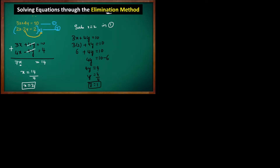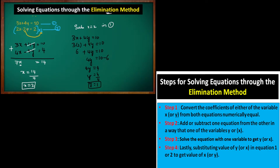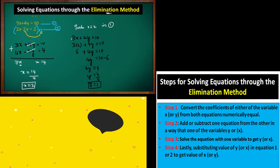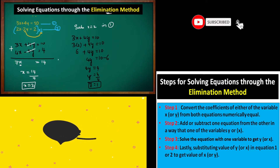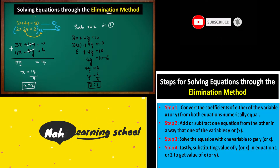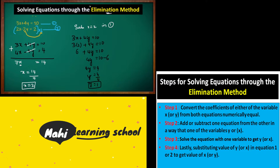Let us recap the steps of elimination method. First, convert either the x or y coefficient to be numerically equal. Second, eliminate either x or y — here we eliminated y. Third, solve the resulting linear equation in one variable to get x = 2. Fourth, substitute that value into either equation to find y.